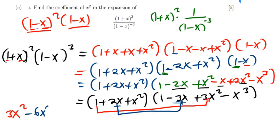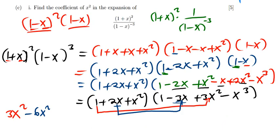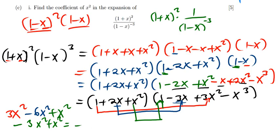So that gives negative 6x squared. Checking other combinations: this times that gives x cubed — not interested. This one times that gives 2x — not interested. But if I do x squared times 1, I get plus x squared. So adding all the x squared values: 3x squared minus 6x squared plus x squared gives negative 2x squared.